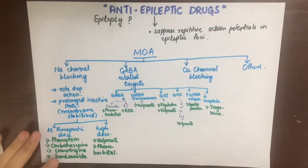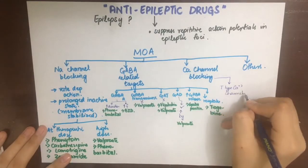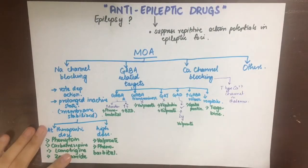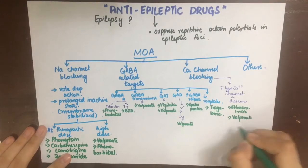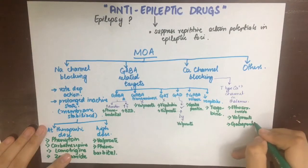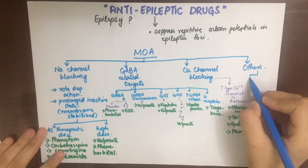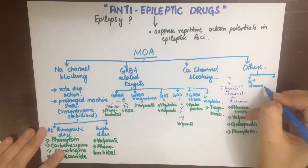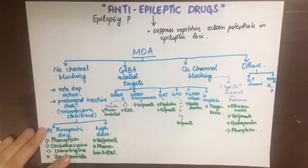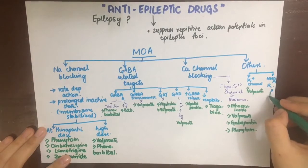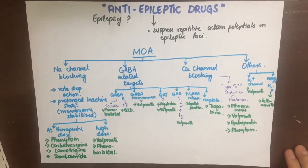Another way to inhibit neurotransmission is to decrease calcium influx from presynaptic neurons in the thalamus, because T-type calcium channels are very abundant there and thalamic neurons act as pacemakers generating rhythmic cortical discharges. The drugs that act by this mechanism are ethosuximide, valproic acid, gabapentin, and phenytoin. Lastly, some anti-epileptic drugs act on potassium channels to cause hyperpolarization — such as valproic acid — while others inhibit NMDA receptors of glutamate, including felbamate and topiramate.